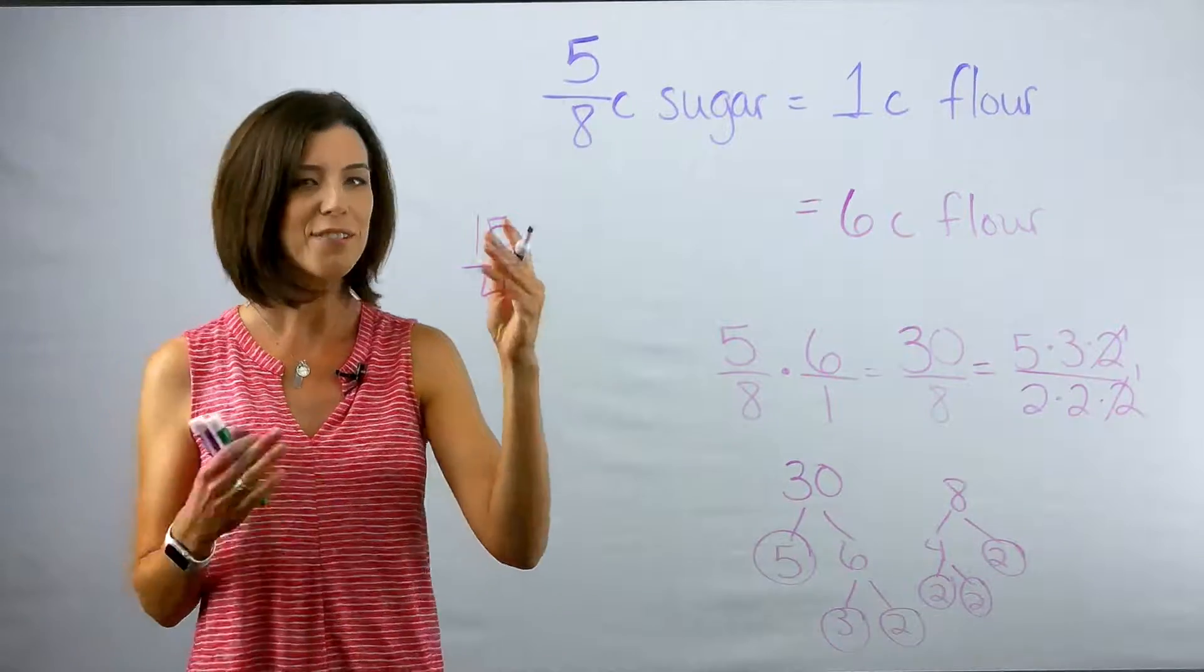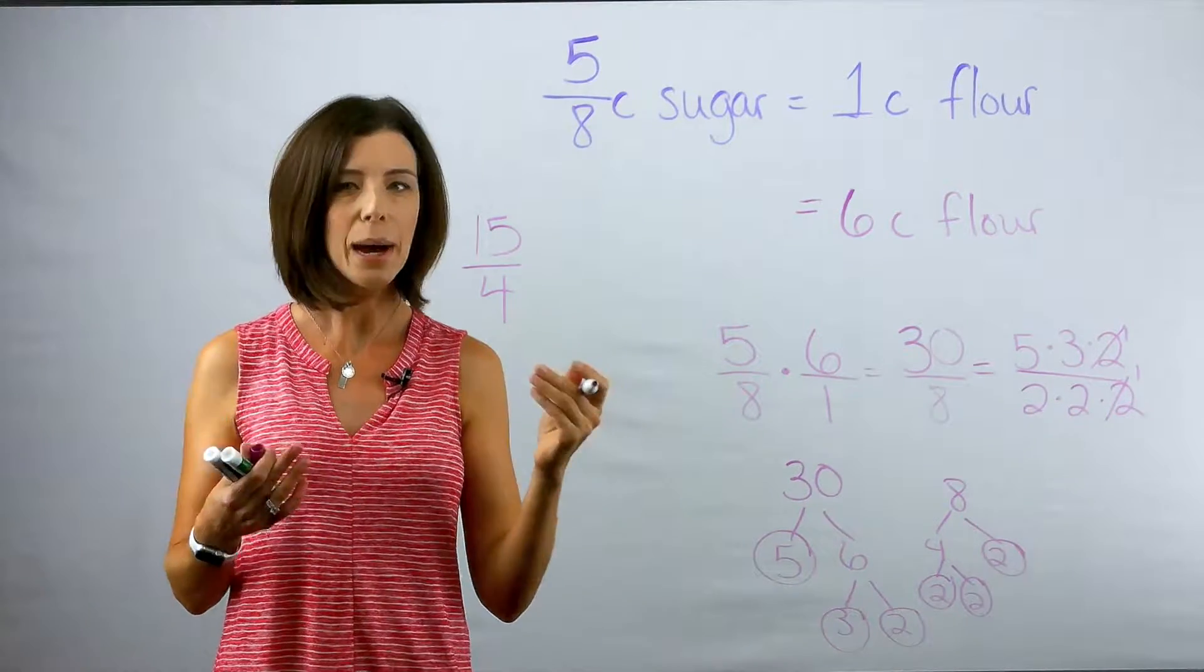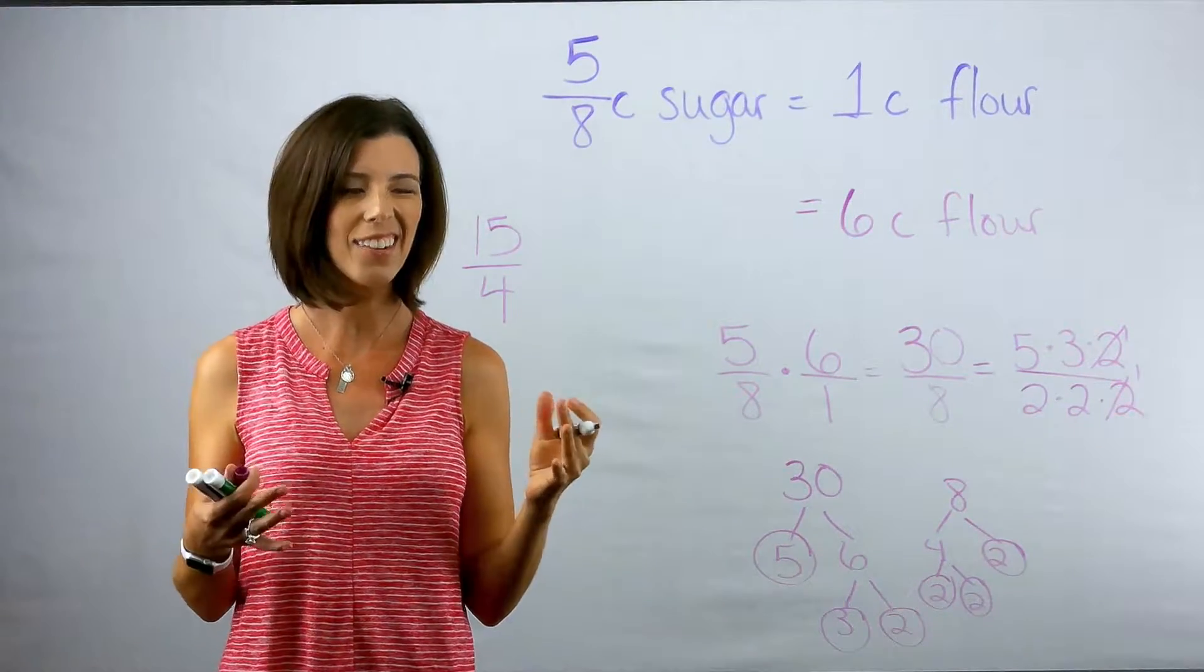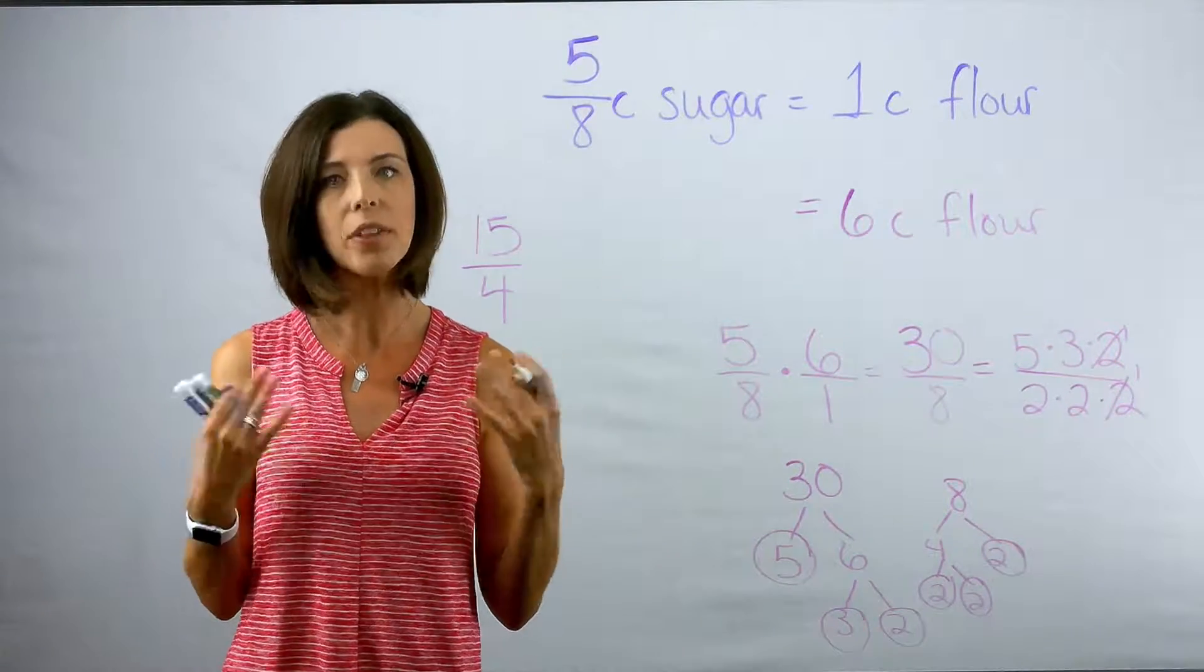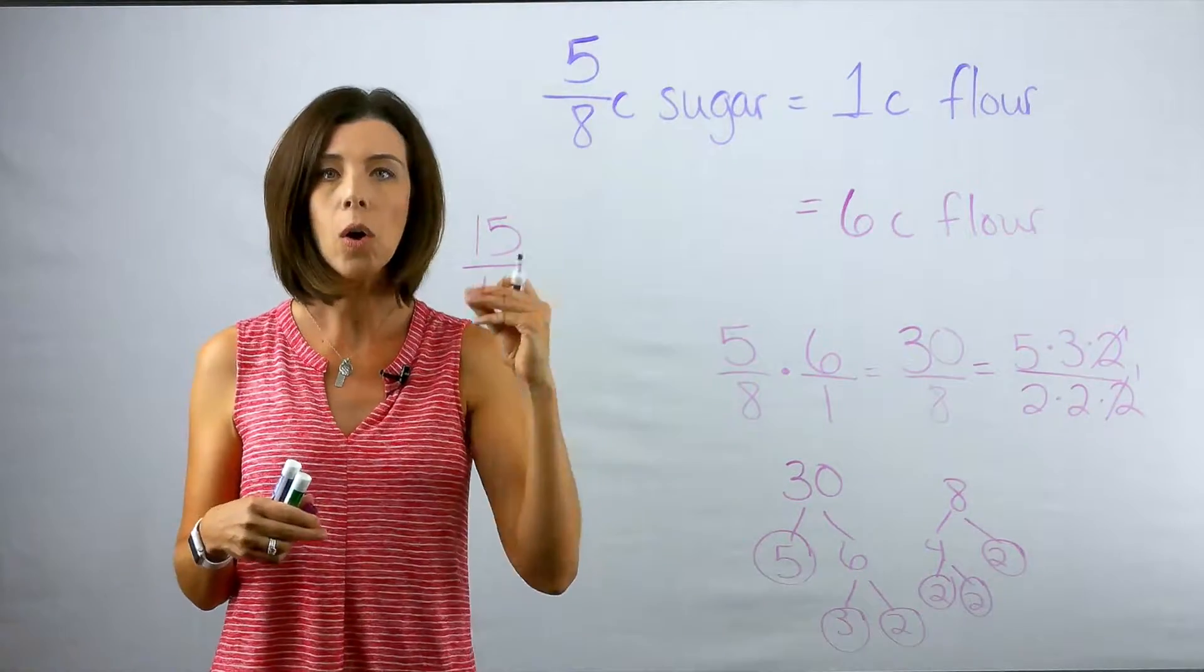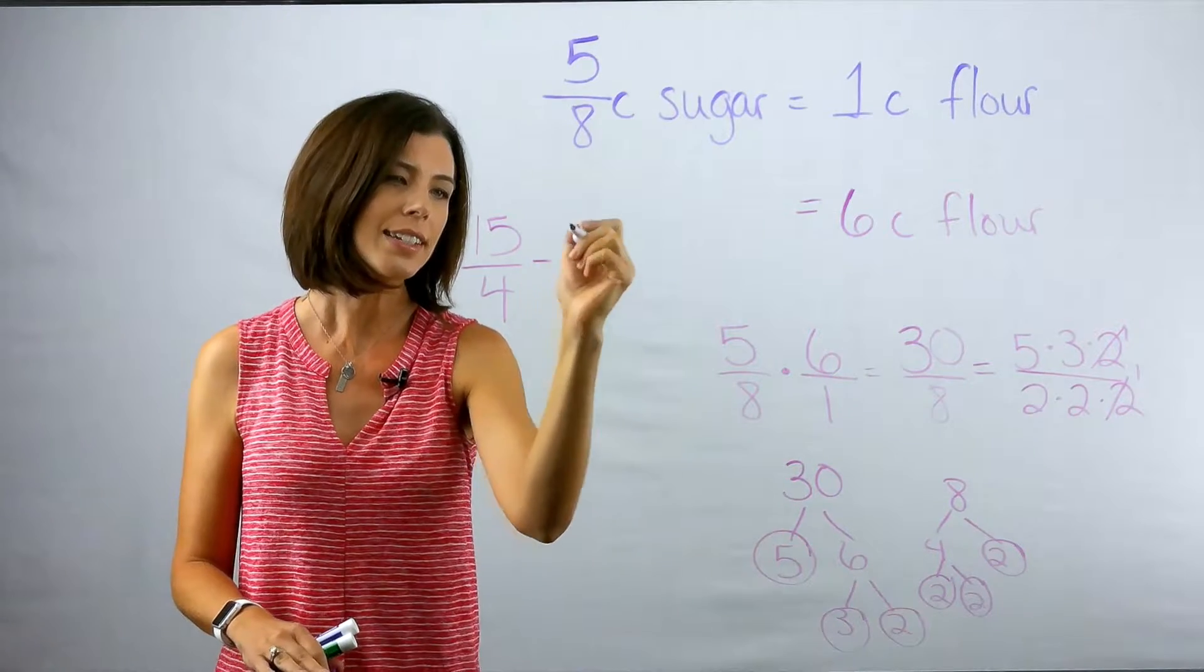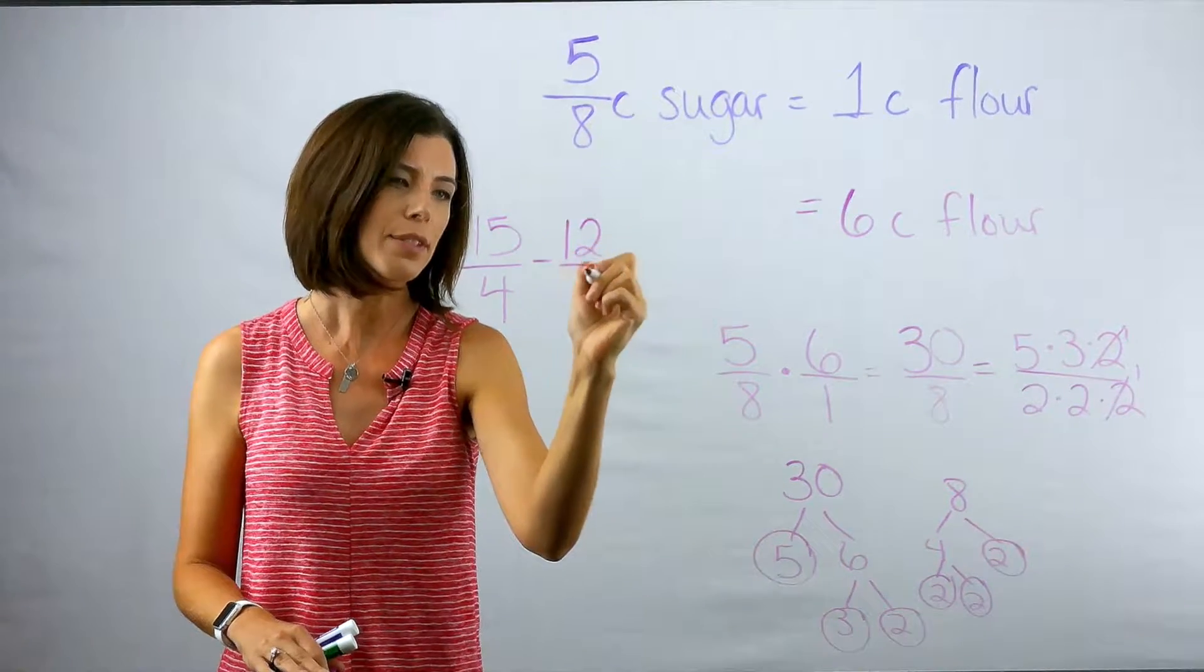So now I know I need fifteen-fourths cup of sugar. But you're like, well, what does that even mean? Fifteen copies of a fourth? Okay. Can I take out wholes? So I'm thinking that I can take out twelve copies of a fourth, which would reduce to three wholes.